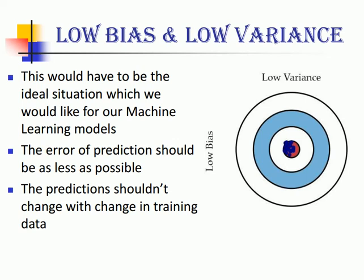Let's consider the most ideal situation, which is low bias and low variance. Here all our models hit the bullseye, so the error of prediction is as low as possible and the predictions don't change with the change in training data. This ideally does not happen.